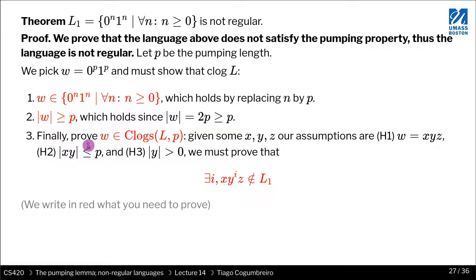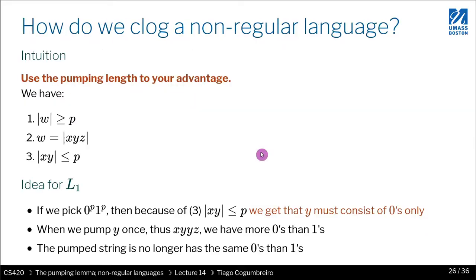So finally, we need to prove that the string belongs to the clogged version of L. So to be able to prove that, we need to, given some division of our string, which we don't know—we don't know how the string was going to be divided. So let's say there's some x, y, and z. And since that x and y is smaller or equal than P, and y is, the length of y is greater than 0, we must show that there exists some i, some power, such that x, y to that power, z, does not belong in L₁. And the i that we choose is actually going to be 2, as we saw before. We want to duplicate the y, XYYZ.